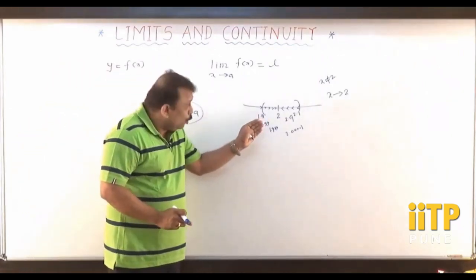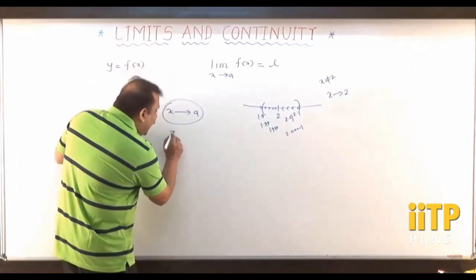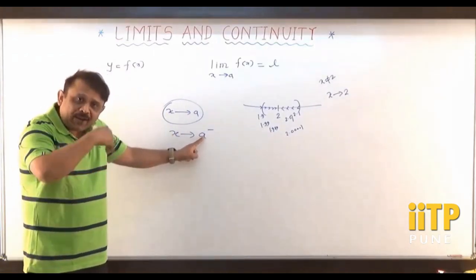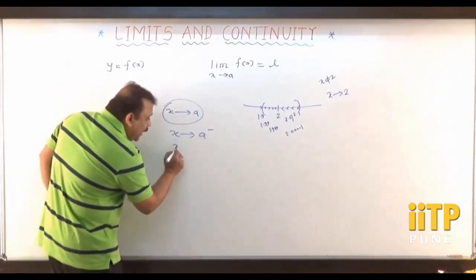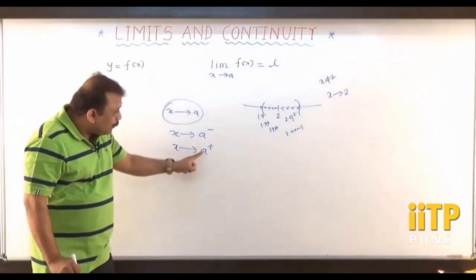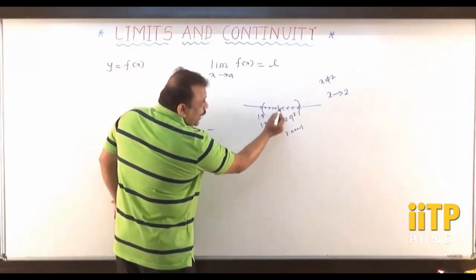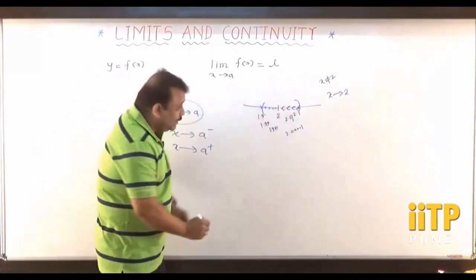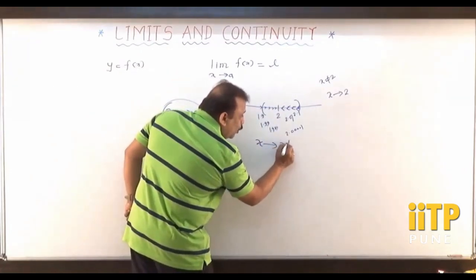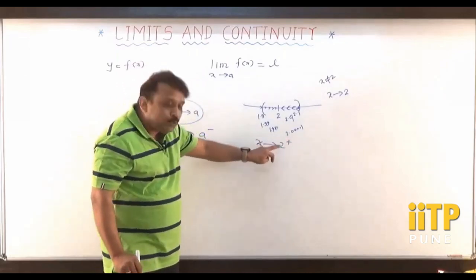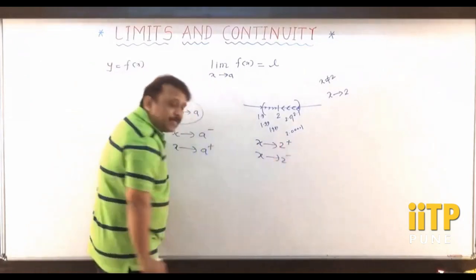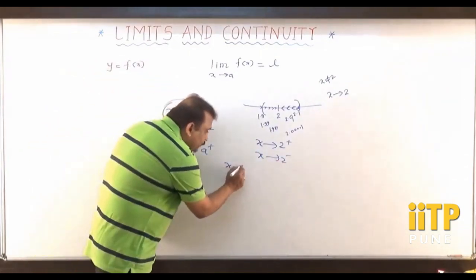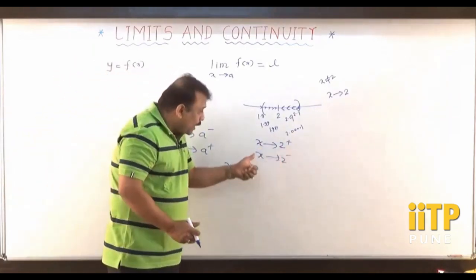Whenever x is coming close to 2 from its left, we express that as x tends to a minus. This minus sign indicates that x is approaching a from the left of a. When I write x tends to a plus, that means x is approaching a from its right — these are numbers very close to 2 but all greater than 2. We express this by writing x tends to 2 plus. So x tends to 2 plus means x approaches 2 from the right, and x tends to 2 minus means x is approaching 2 from the left.